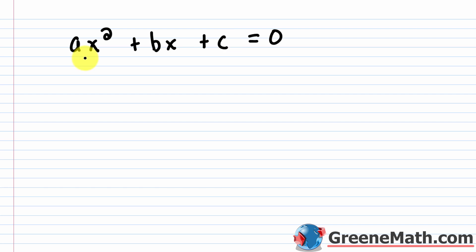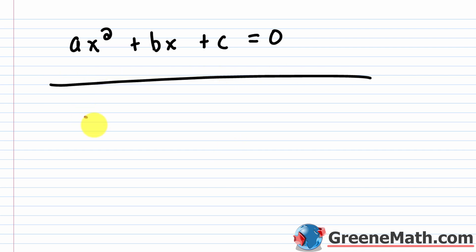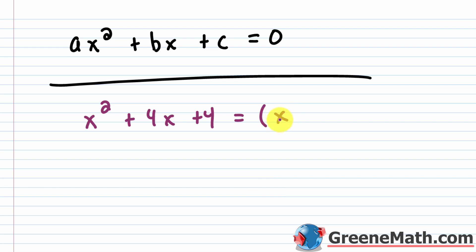Our goal is to create a perfect square trinomial on the left side so we can get a binomial squared, then use the square root property. A perfect square trinomial, for example x² + 4x + 4, factors into a binomial squared: (x + 2)². That's what we're trying to create — and that's what completing the square does.